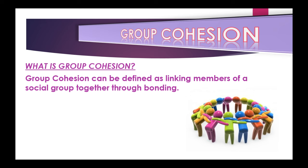Human beings form groups naturally, but in order to succeed and to endure, groups need to have cohesion. Cohesion is the set of bonds between members of a group that keeps it together. People are often drawn to a group because it offers close bonds and relationship possibilities, but these sometimes require effort to maintain. The following factors encourage group cohesion.